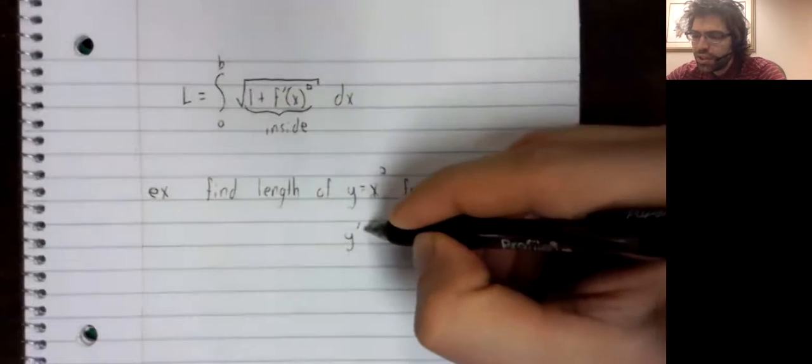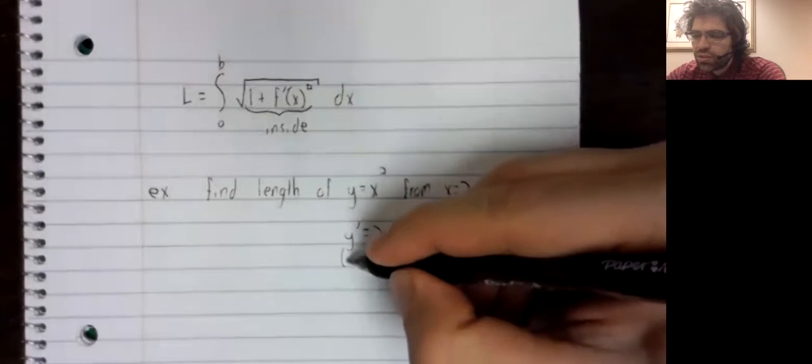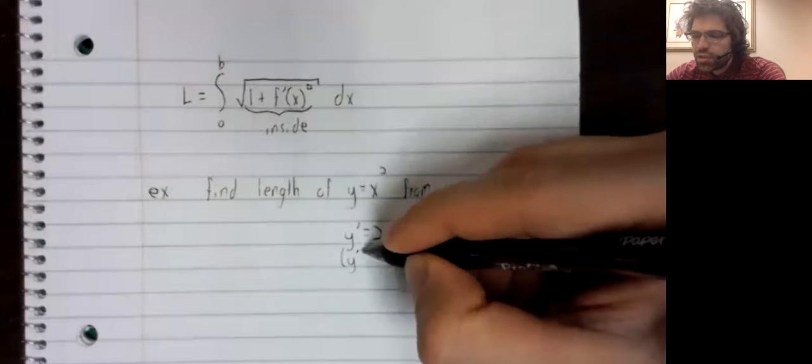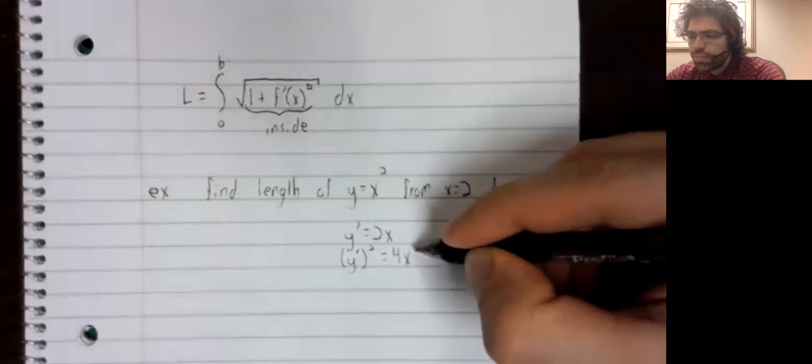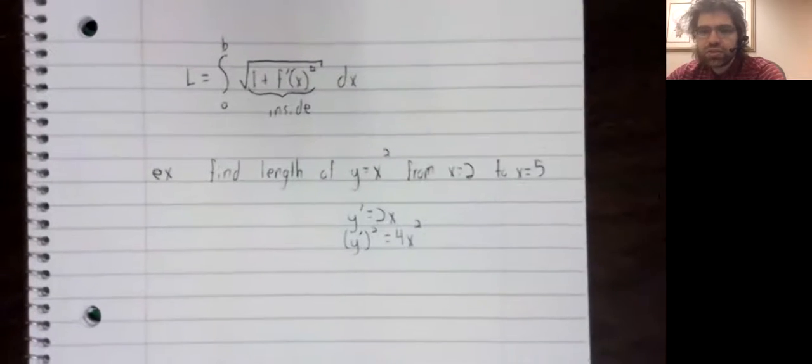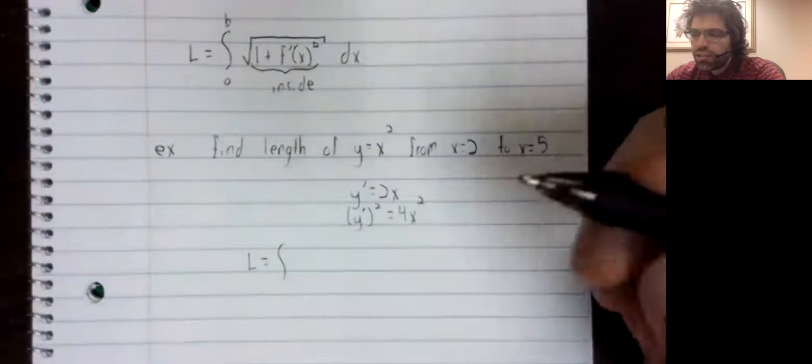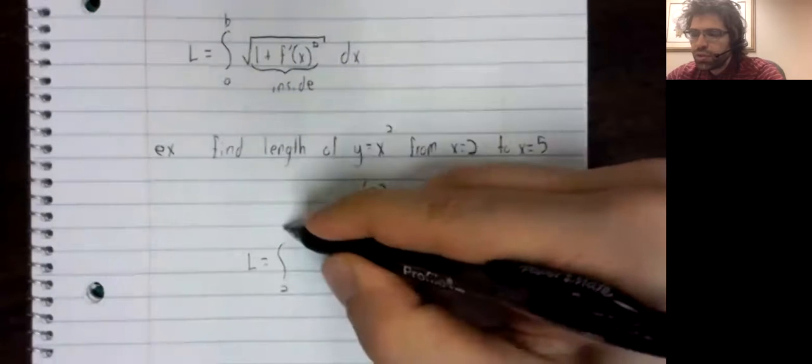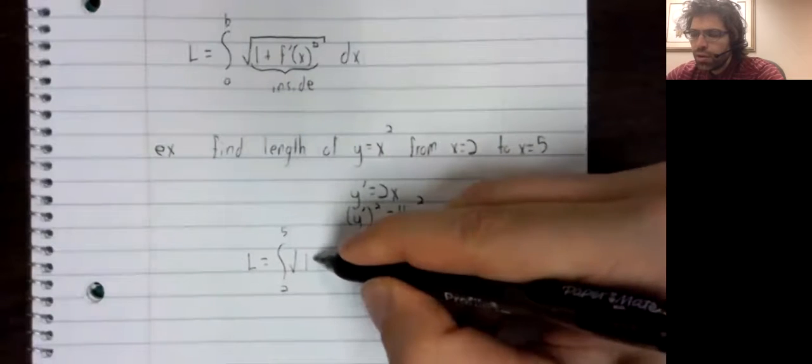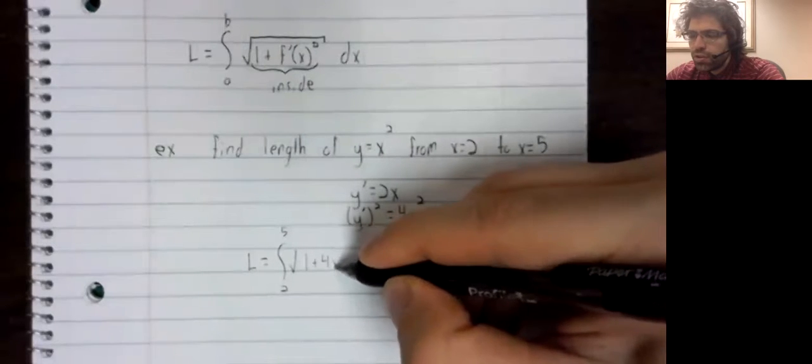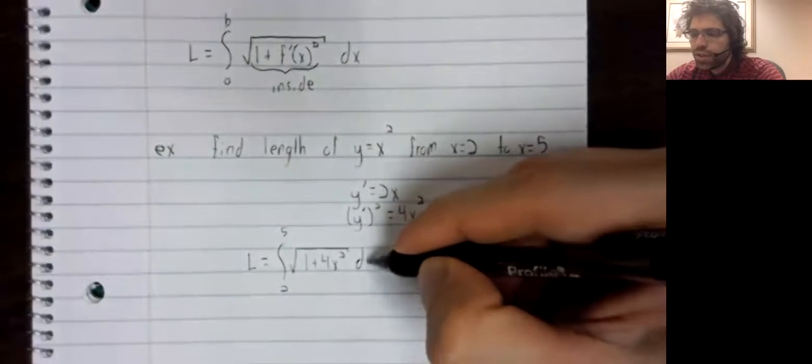Hardly a function that was designed to be complicated, and yet its derivative is 2x. Its derivative squared is 4x squared. The arc length is the integral from 2 to 5 of the square root of 1 plus 4x squared dx.